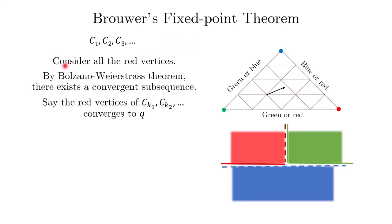We consider all the red vertices of these rainbow triangles. Because we are working with infinitely many points in a compact subset of R², we can apply the Bolzano-Weierstrass theorem to conclude that there is a convergent subsequence among these red vertices.